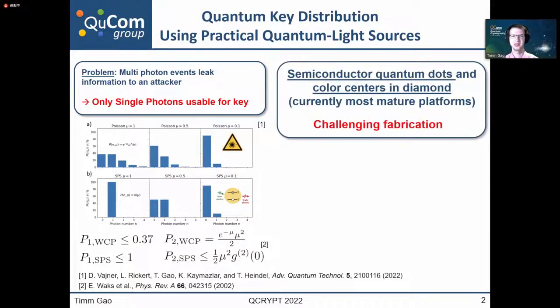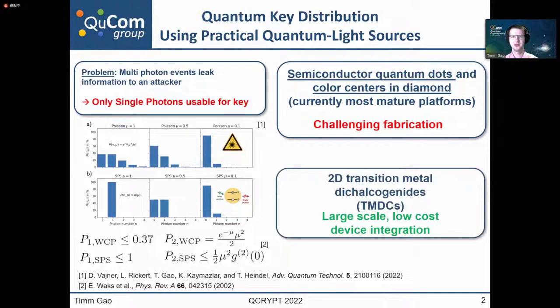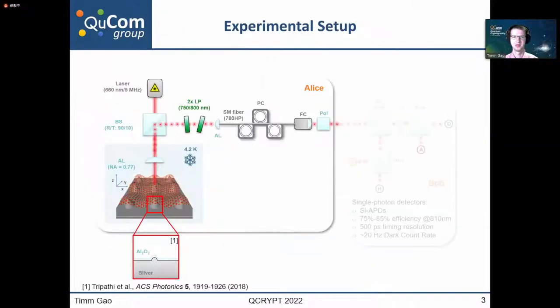So far, semiconductor quantum dots and color centers in diamonds are the most mature platforms for this task. However, to this day, this challenging fabrication is one of the major roadblocks for widespread applications. On the other hand, 2D transition metal dichalcogenides TMDCs emerged as a new material platform, which could allow for large scale and low cost device integration. In our experiments, we used a single layer of tungsten diselenide on a silver patterned surface. We have a surface with silver nanoparticles on which strain centers occur, and on these strain centers, single photon, single quantum emitters can occur.